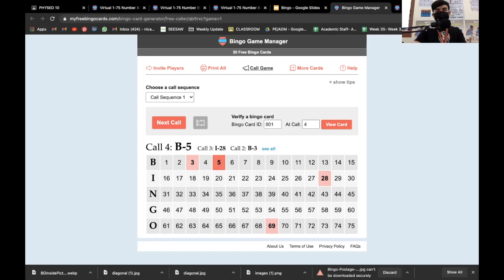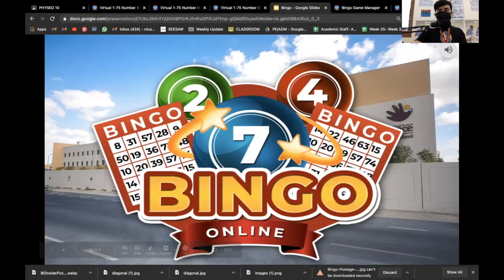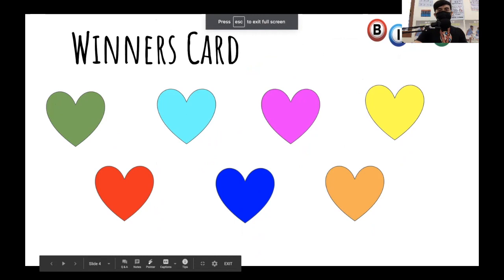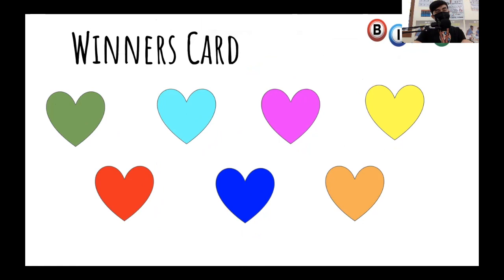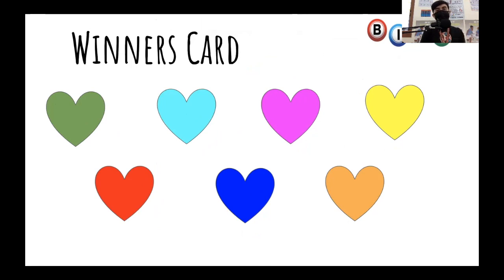Let's look at the bingo patterns. Before each round begins, the rules must be clear. Whoever wins gets a chance to select a winner card. We have 7 winner cards here, and they are in the form of exercises, workouts, and meditation.